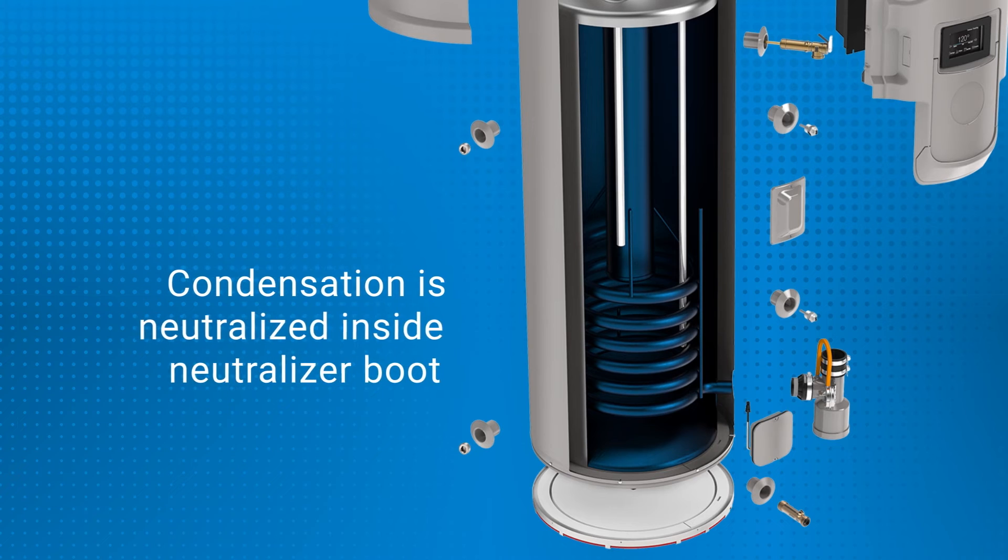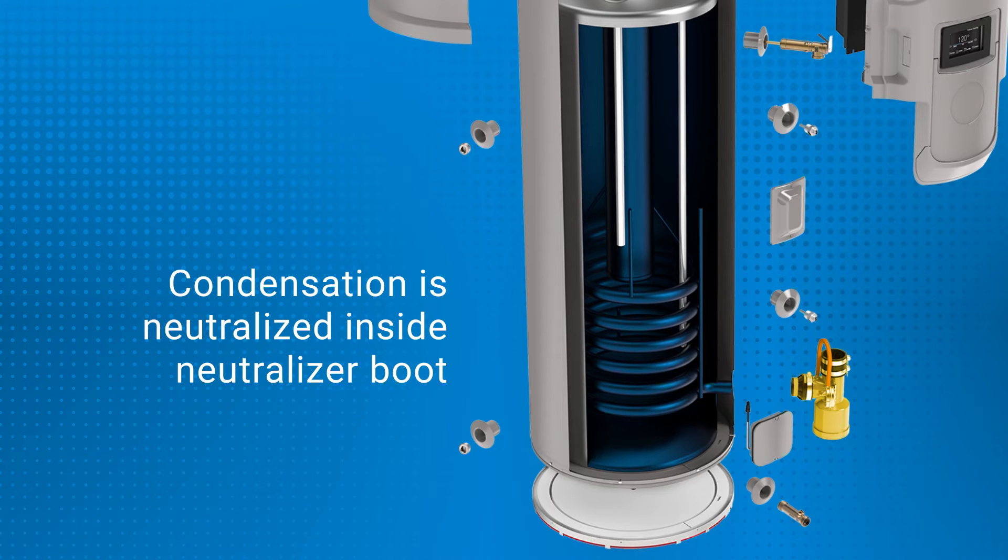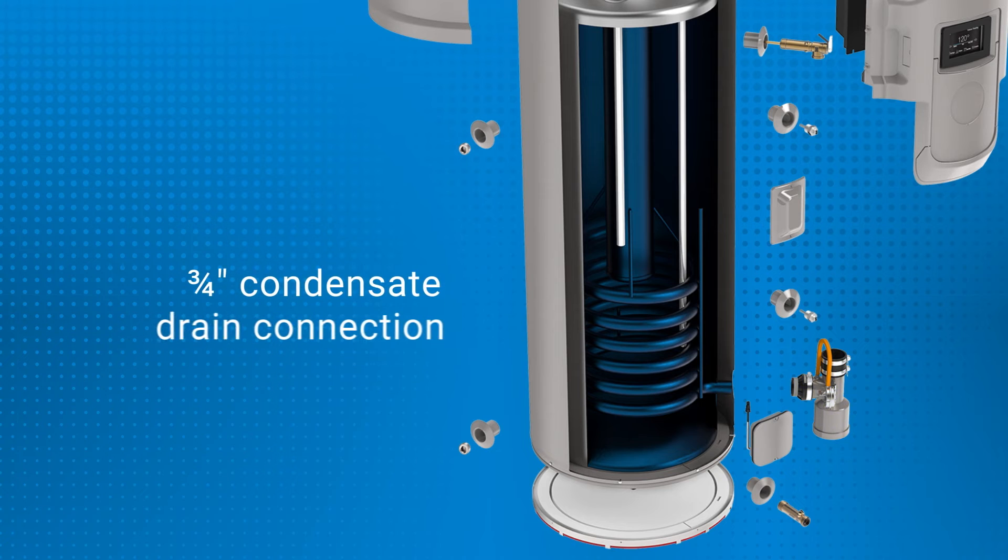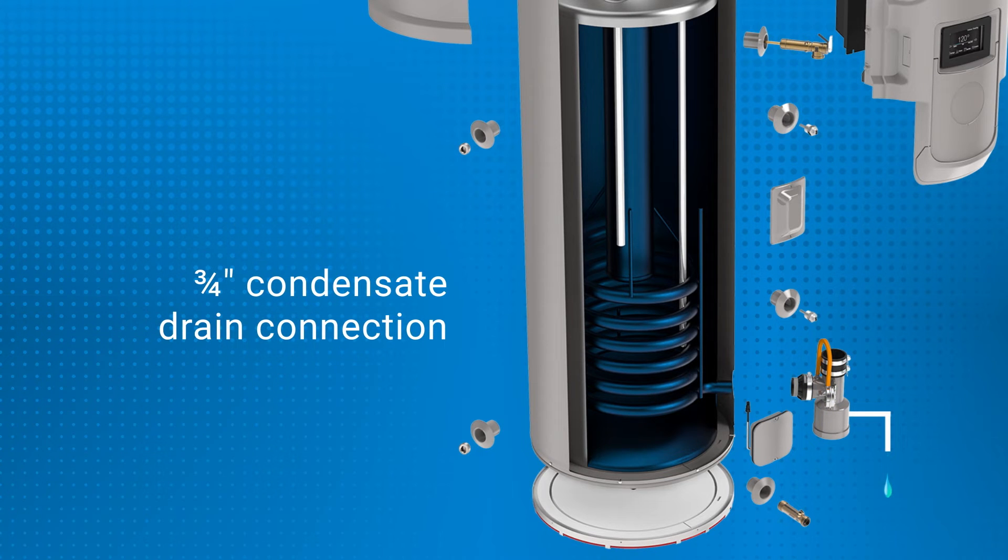Acidic condensation then flows toward the exhaust tee where it's neutralized inside the neutralizer boot. The neutralized condensation then safely drains out of the unit.